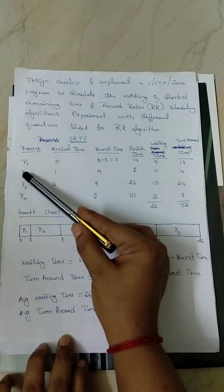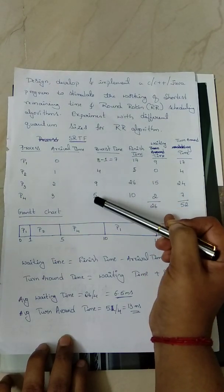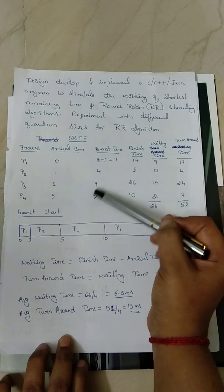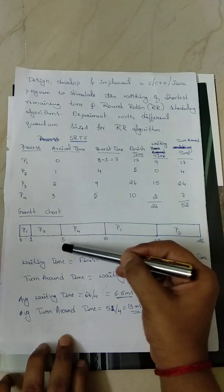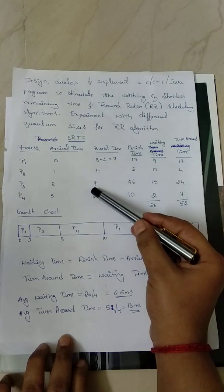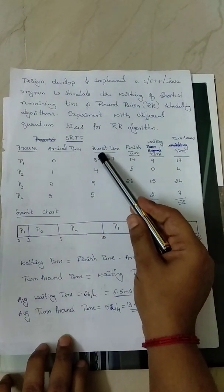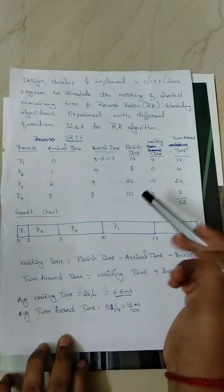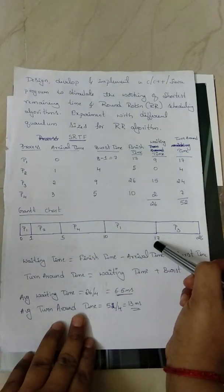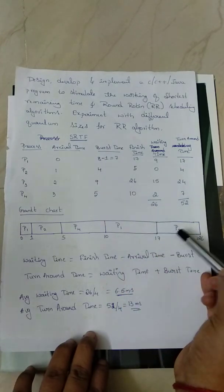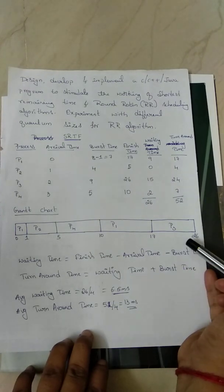P2 has completed its execution. Now compare the burst times of P1, P3, and P4 in the ready queue. P4 has the least burst time of 5, so assign P4 for execution. 5 plus 5 gives t=10. Now P4 has completed. Compare P1 and P3: P1 has burst time 7, the least. Assign P1 for execution from t=10 to t=17. The last process P3 executes for 9 units, so 17 plus 9 equals 26. This completes the Gantt chart.